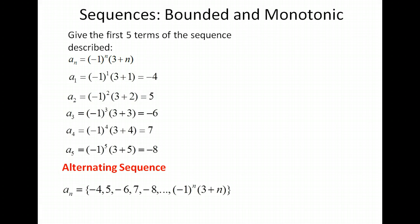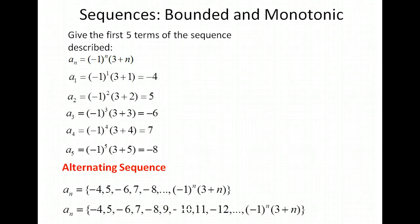Let's list our range values. You can probably guess the next terms just by following the pattern: the next value will be positive 9, then negative 10, then positive 11, and so on. Usually once you work out a few terms, you can follow the pattern to get the next terms of the sequence.